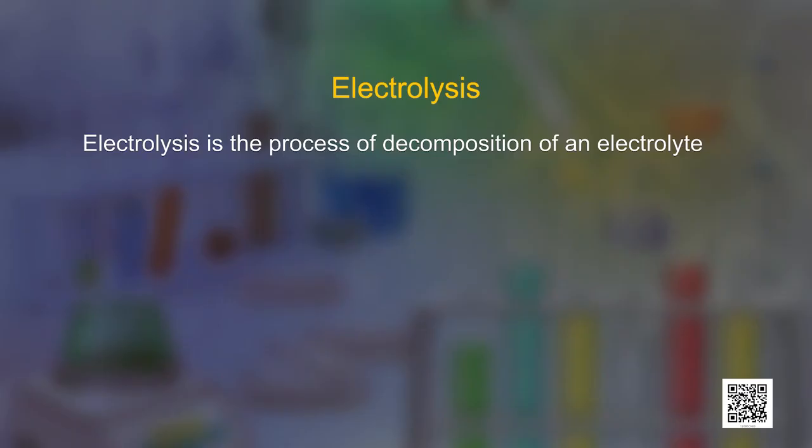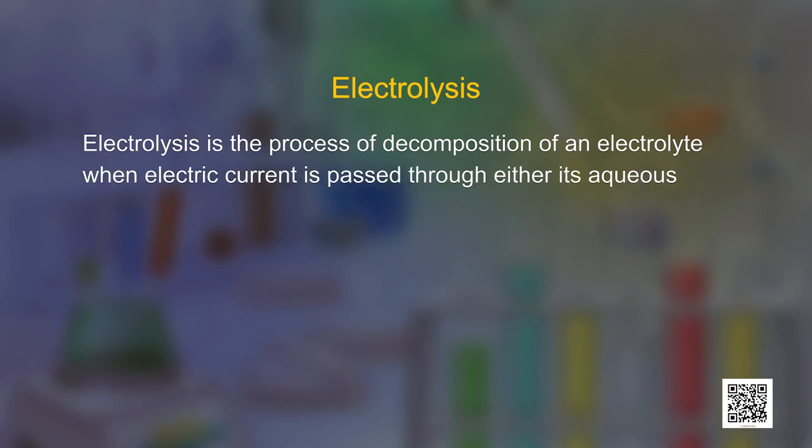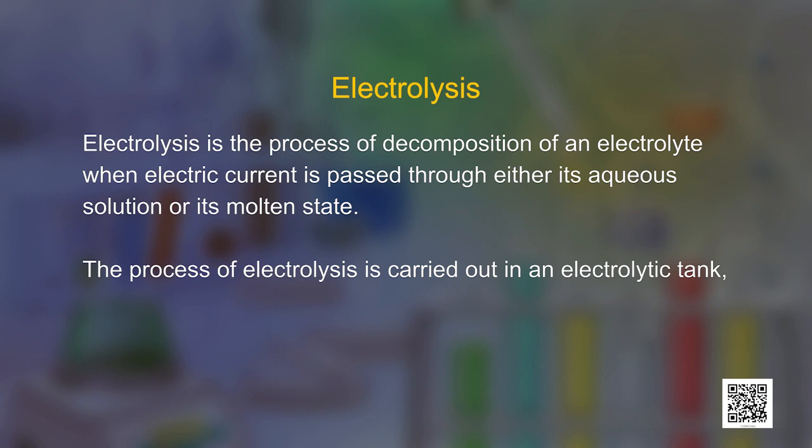Electrolysis is the process of decomposition of an electrolyte when electric current is passed through either its aqueous solution or its molten state. The process of electrolysis is carried out in an electrolytic tank which is non-conducting in nature. Electrolysis causes dissociation of the electrolyte into ions which are directed towards the oppositely charged electrodes, where they either undergo oxidation by losing electrons at the anode, or reduction by accepting electrons at the cathode.